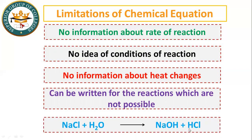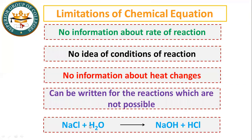For example: NaCl plus water giving NaOH plus NaCl — this reaction is not balanced. Checking: sodium, hydrogen, oxygen atoms do not balance. So even though we can write this equation on paper, the reaction may not be possible. A chemical equation cannot tell us whether a reaction is actually feasible.